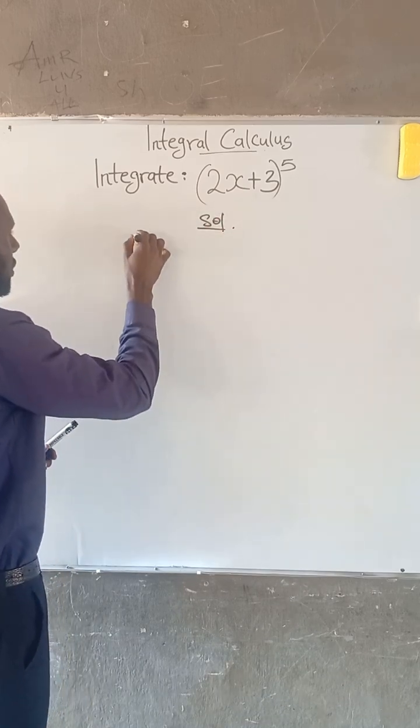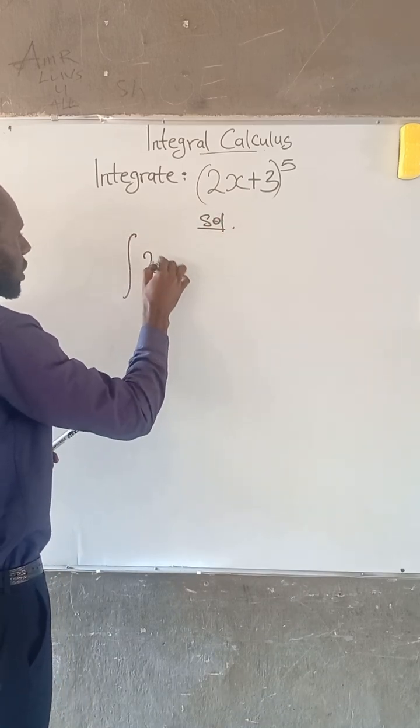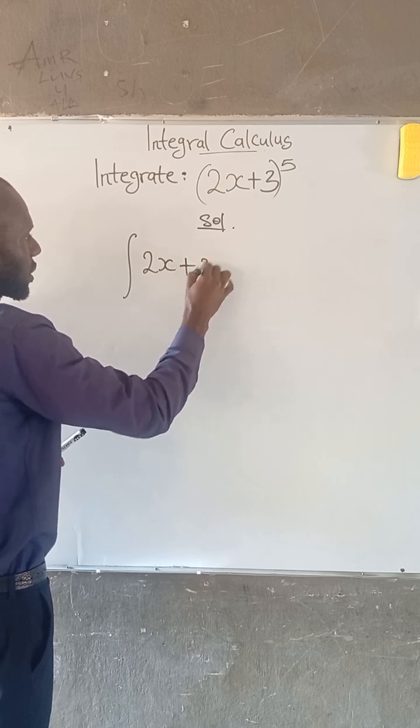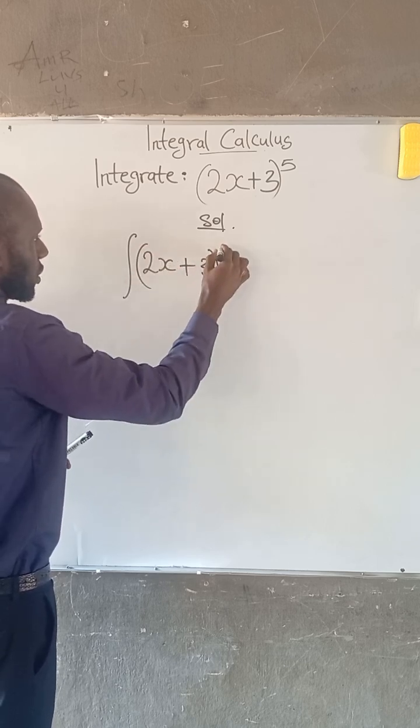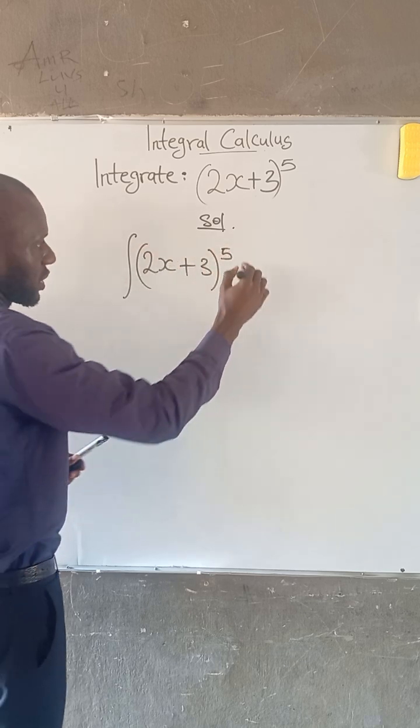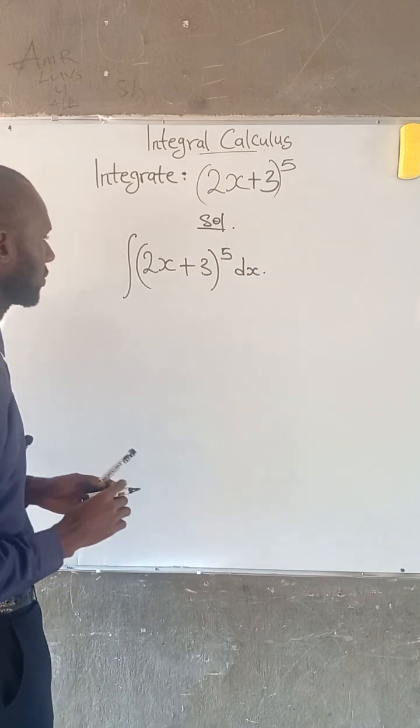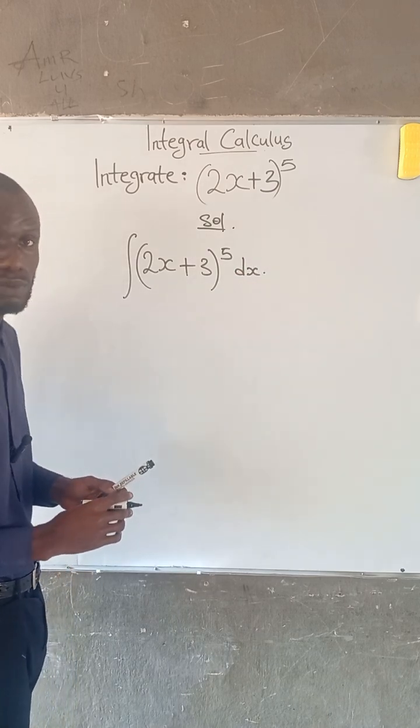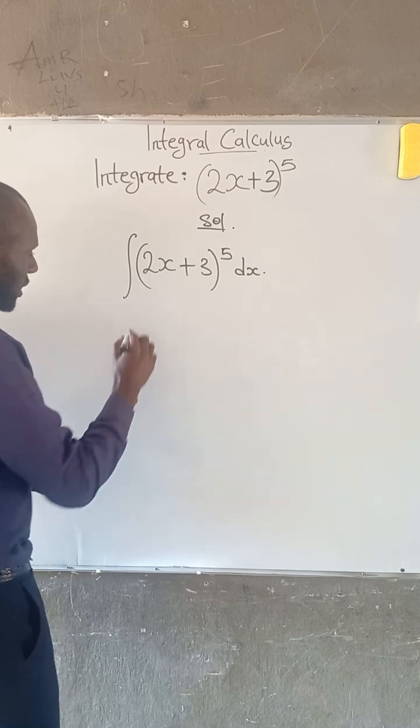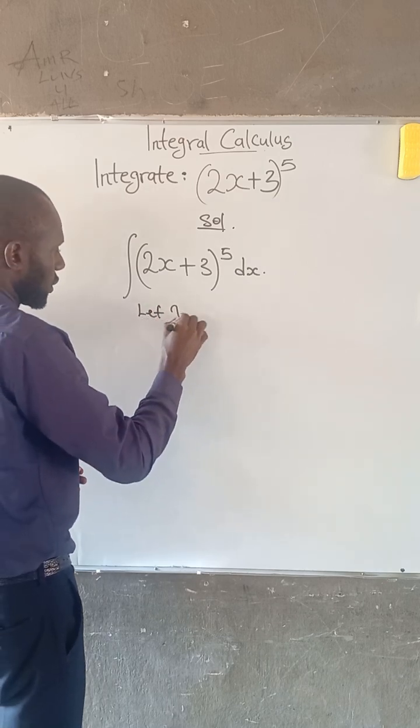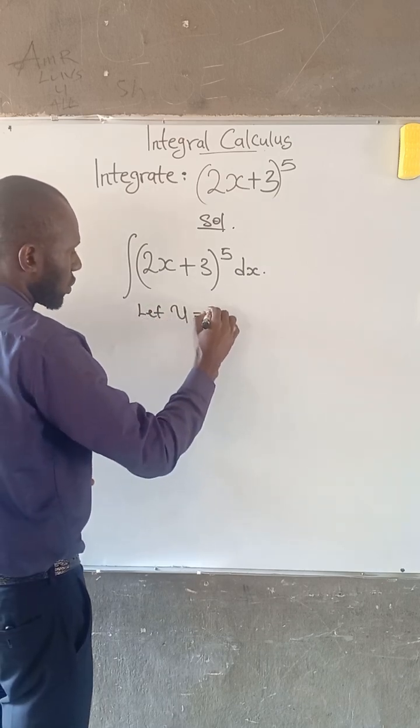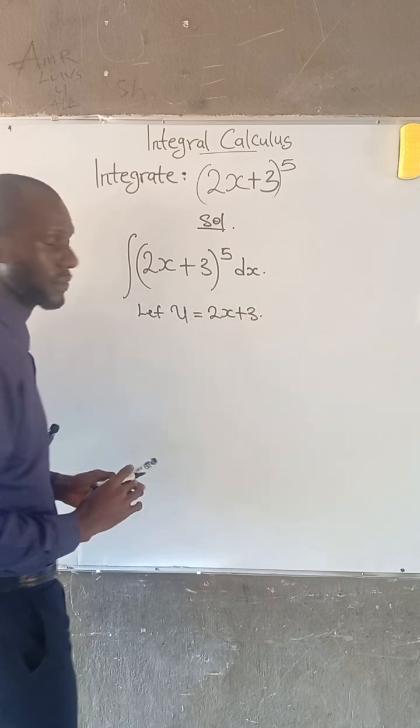So we have to integrate (2x + 3) to the power of 5 with respect to x. At this point we have to make some substitution. We can say let u be equal to 2x + 3.